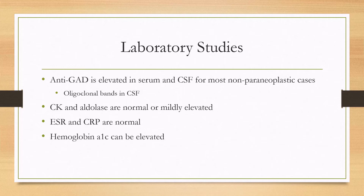In terms of lab studies, anti-GAD is elevated in both the serum and the CSF for most non-paraneoplastic cases, and in the CSF the anti-GAD is probably the cause of oligoclonal bands commonly found in this disease. Muscle enzymes CK and aldolase are normal or mildly elevated, and inflammatory markers such as ESR and CRP are also normal. Hemoglobin A1c can be elevated, as these patients can have diabetes.